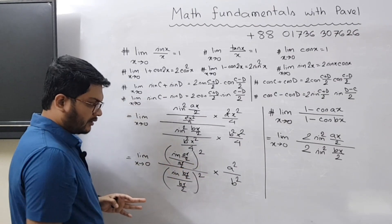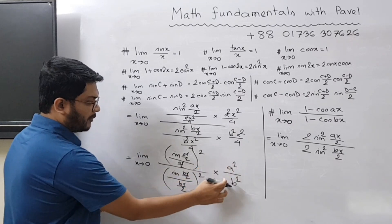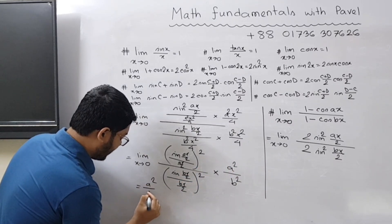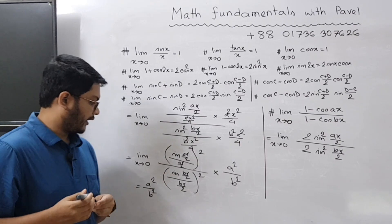So this is 1 and this is 1. 1 square, 1 square, so you have still 1. So a²/b². So the answer will be a² divided by b².